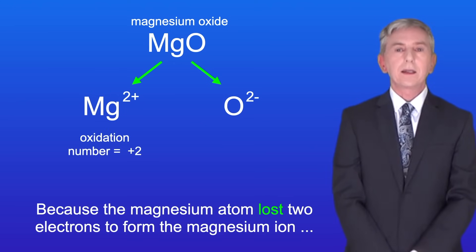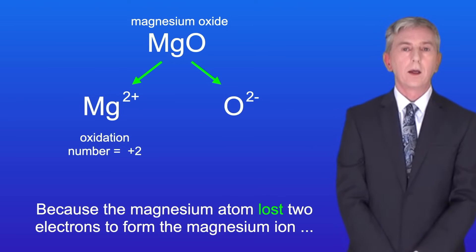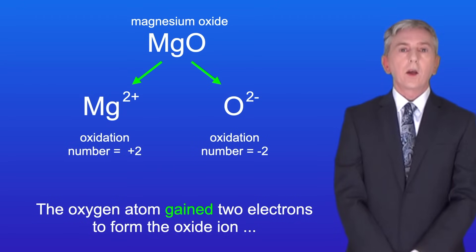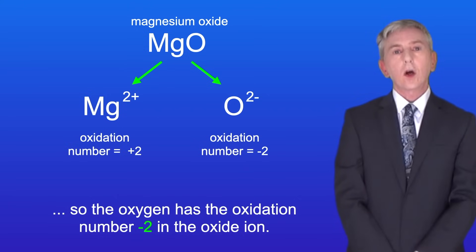Now because the magnesium atom lost two electrons to form the magnesium ion, the magnesium has the oxidation number plus two in the magnesium ion. The oxygen atom gained two electrons to form the oxide ion, so the oxygen has the oxidation number minus two in the oxide ion.